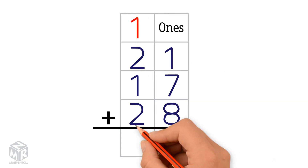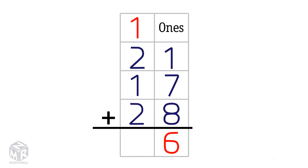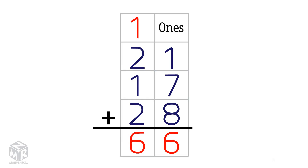Now we add the tens. 1 plus 2 plus 1 plus 2 equals 6. So 21 plus 17 plus 28 equals 66.